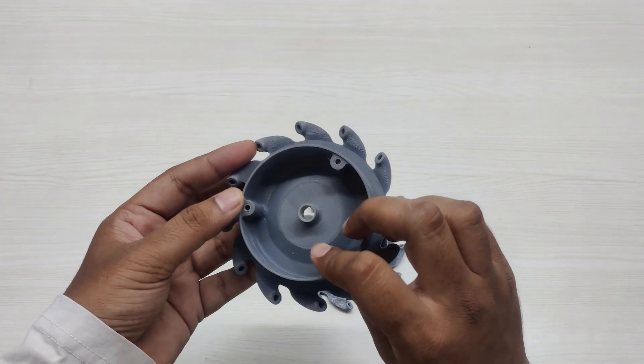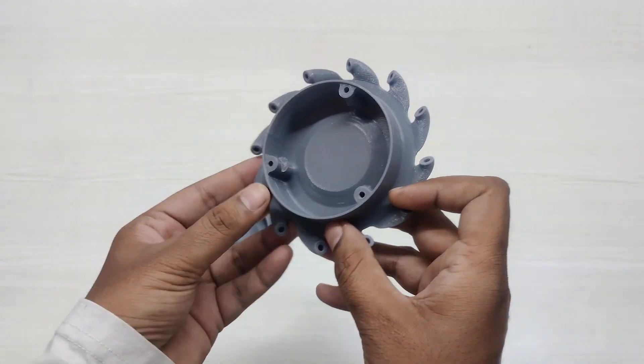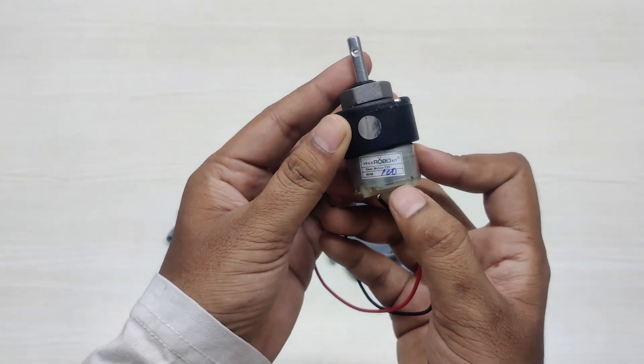In the bottom part I have already inserted three M3 nuts and secured them with the help of a glue gun so that they won't come out. And here is the wire connector to mount the motor with the wheel. I am using a 100 RPM motor.